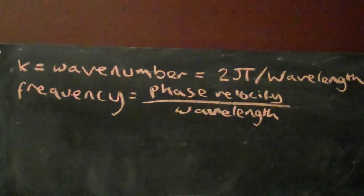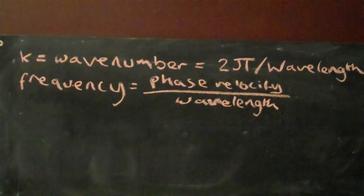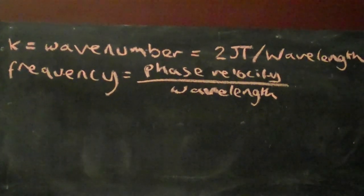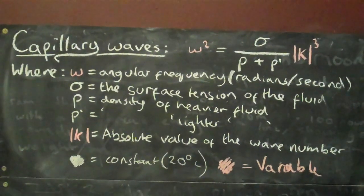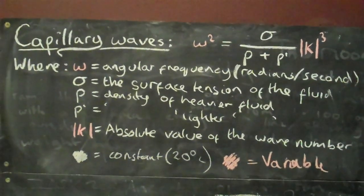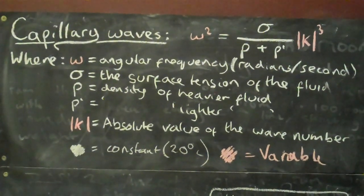From this, we can find wavenumber, 2 pi over wavelength, frequency, phase velocity over wavelength, and angular frequency, surface tension over density of heavier fluid plus density of lighter fluid times the absolute value of k to the power of three. We can then compare our results to what we find when looking at capillary waves on Earth, to gauge how universal our model is.